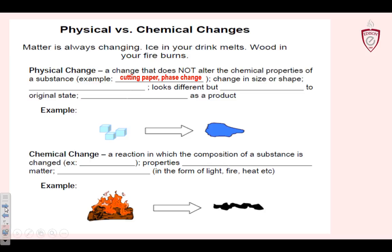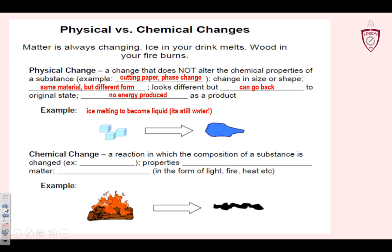I have a piece of paper, I cut it, and I still have two pieces of paper. What changed? Its size and its shape. But the substance is still paper. Same material in a different form. Sometimes it looks different, but it can go back to the original state. No energy is produced — these are all things that qualify this as a physical change and not a chemical change. A great example: ice becoming liquid water. But it's still water — ice is not its own thing, ice is solid water. These nuances in chemistry are just going to keep coming.